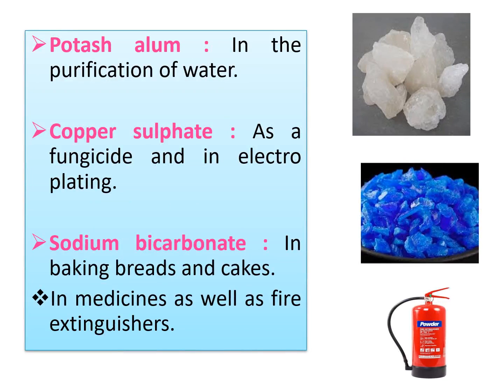Now continuing with uses of salt — we already learned sodium chloride is used for food preservation. Second, potash alum, which is mainly used in the purification of water. You can see the picture on the screen — that white-colored substance is potash alum.